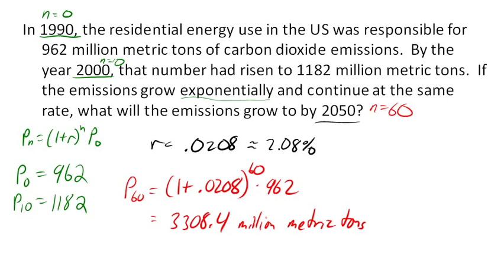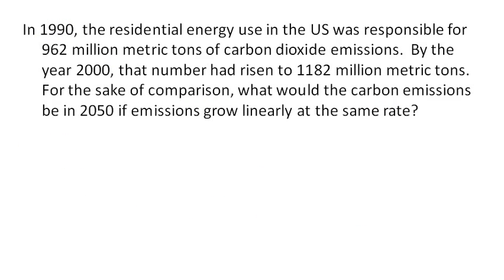We predicted that the carbon dioxide emissions, if they grew exponentially, would grow to 3308 million metric tons by 2050. But we might ask the question, for the sake of comparison, what would the emissions have been if we had grown linearly instead of exponentially?